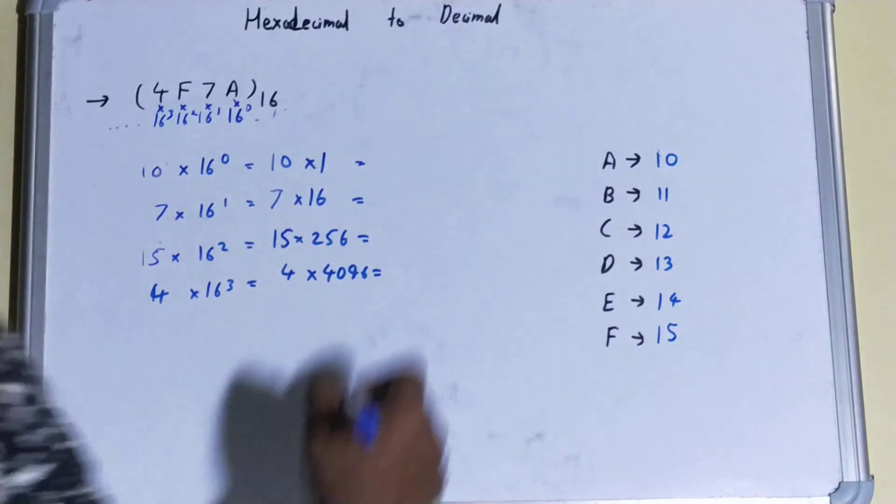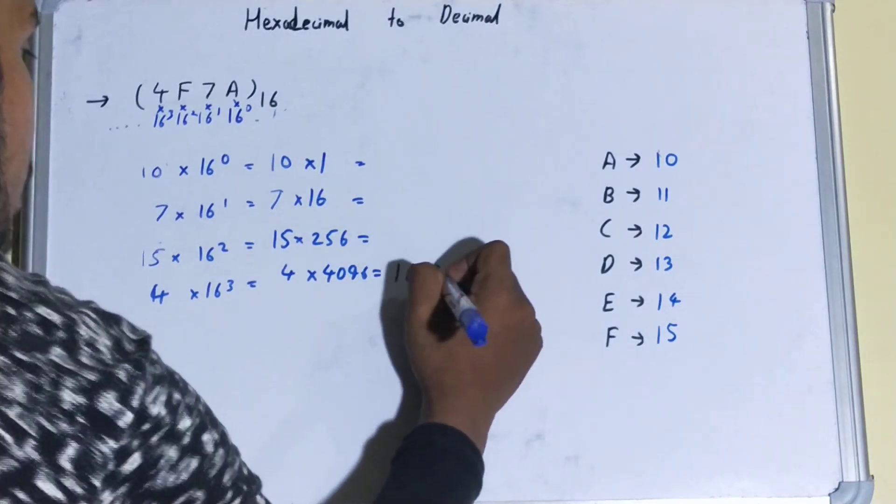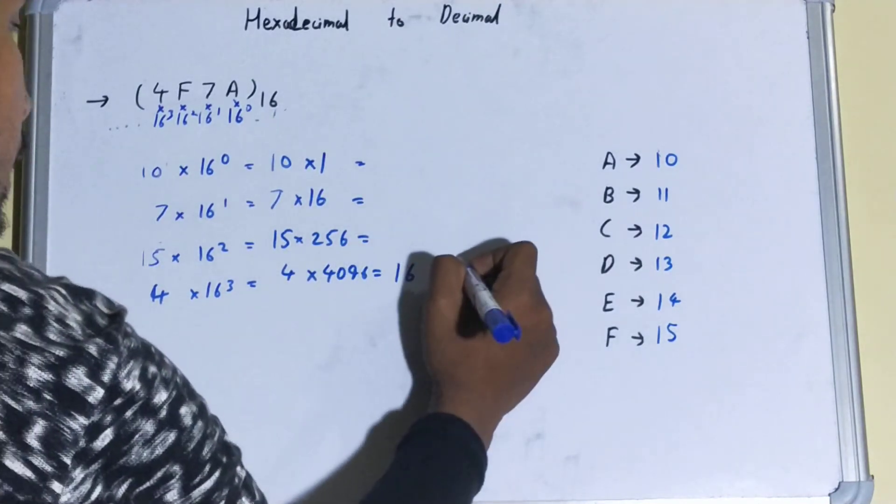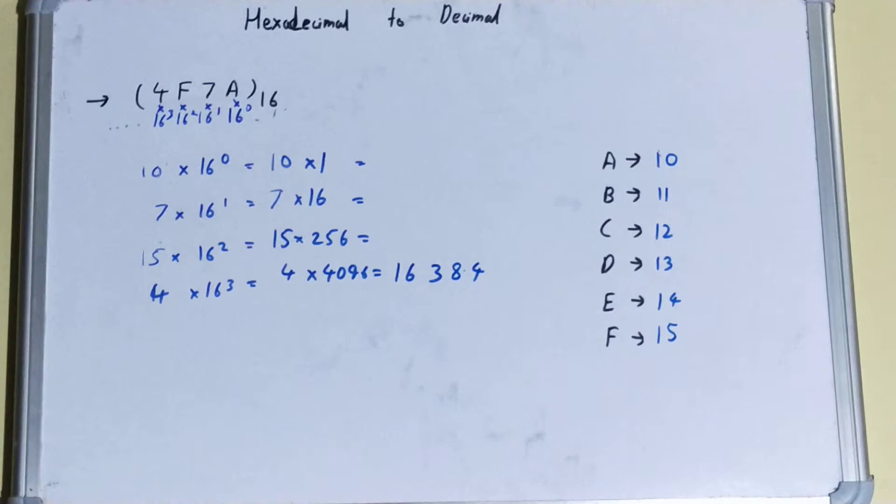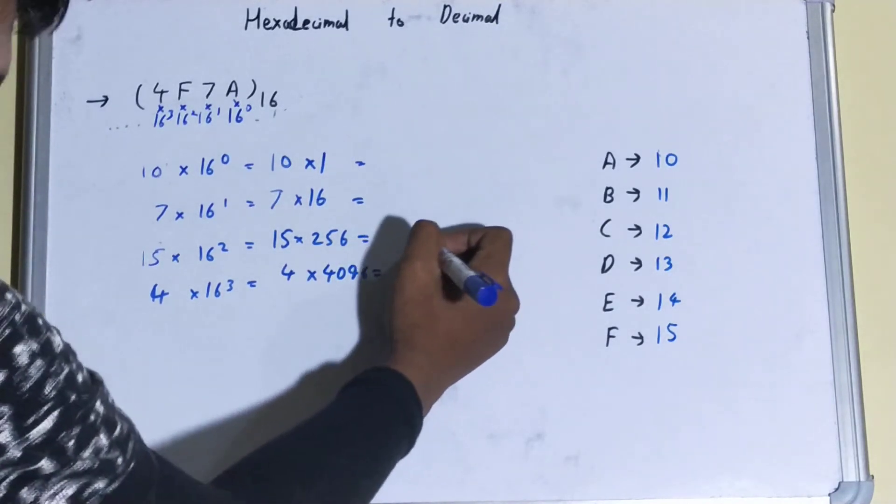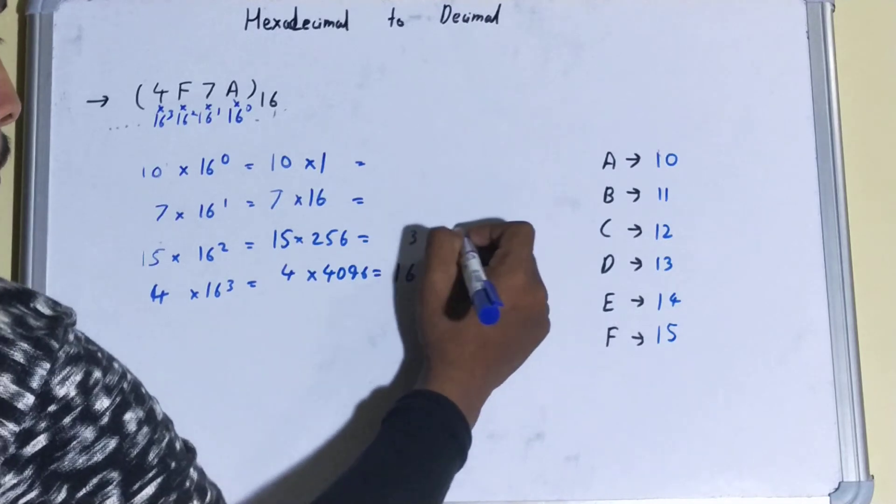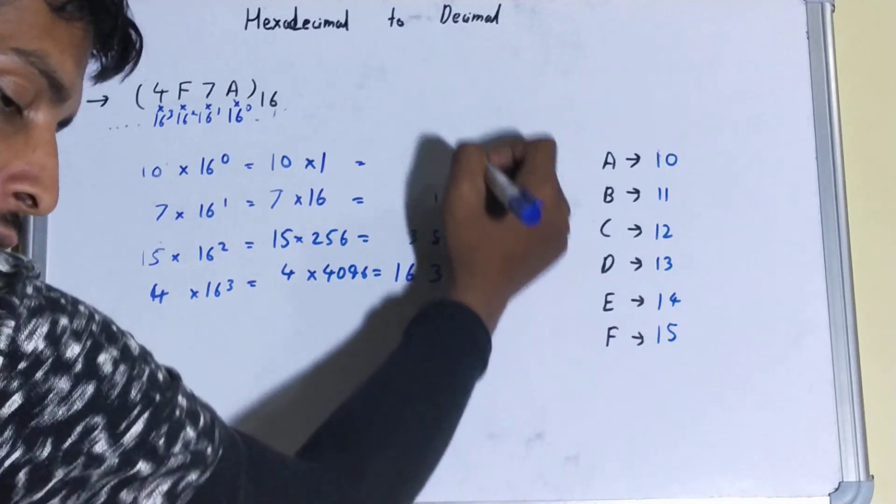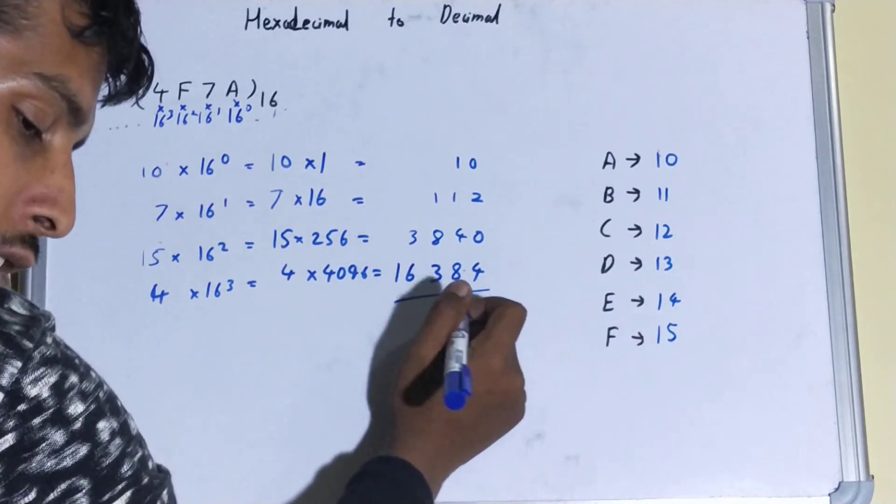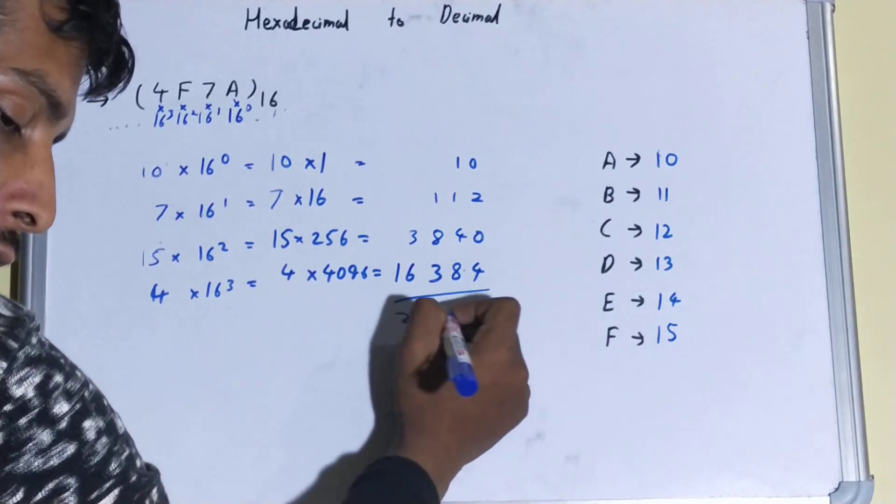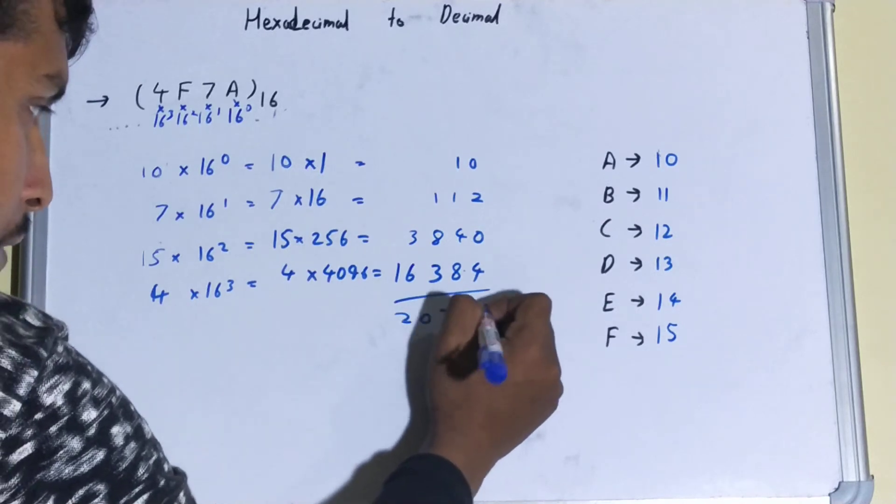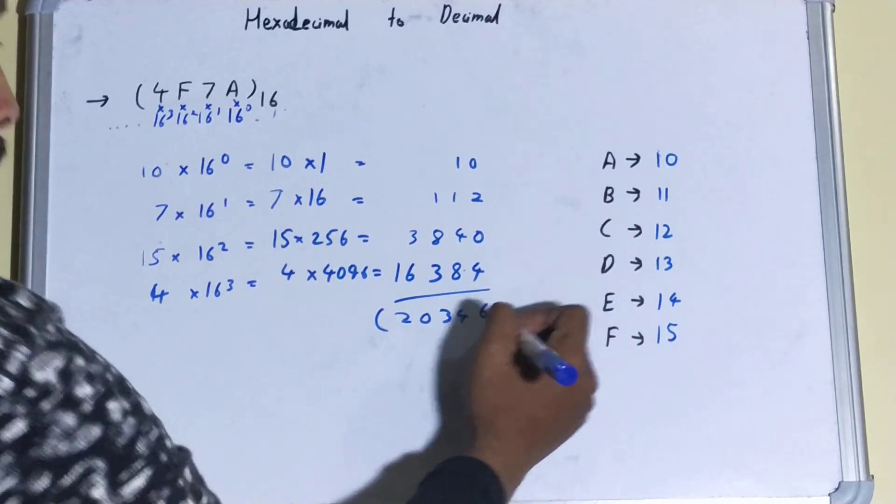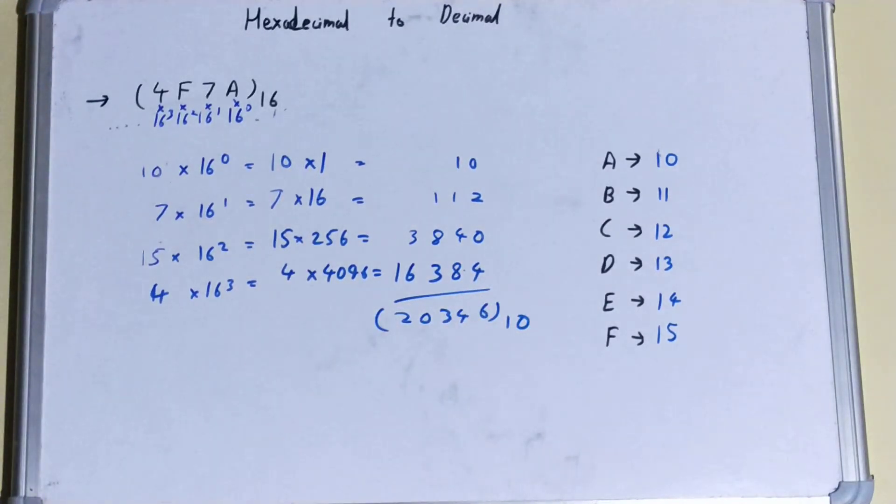So this will be 16,384. You can use the calculator and it will be solved instantly. 3,840, then this is your 112, and this is your 10. So we'll just sum it up and we'll get the equivalent decimal number. So don't forget to add the base.